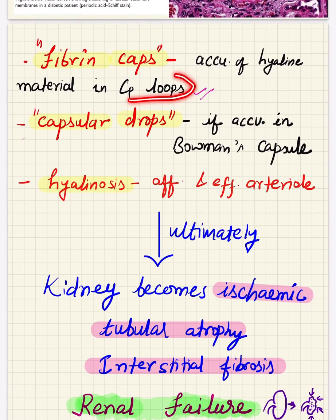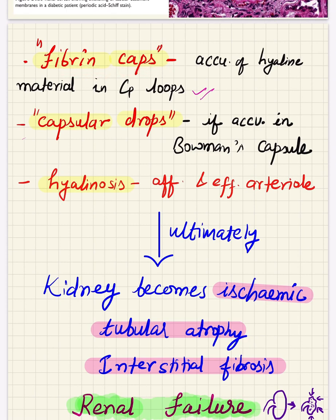The accumulation of proteinaceous material in the capillary loops is known as fibrin caps — this is actually a misnomer because that is not fibrin but proteinaceous material; however, they are known as fibrin caps. They are seen surrounding the capillary loops. This proteinaceous material also accumulates between the parietal epithelial layer and Bowman's capsule, in which case it is known as a capsular drop — again important for MCQs and viva. In the arterioles, there is hyalinosis — deposition of proteinaceous material in the wall of the afferent and efferent arterioles.